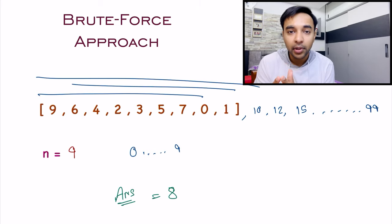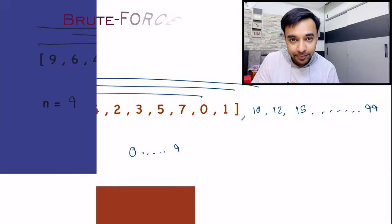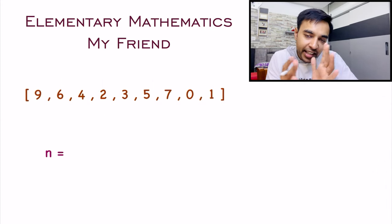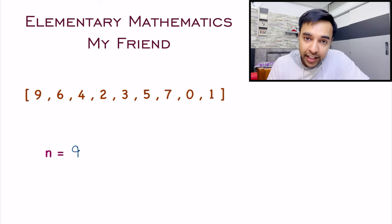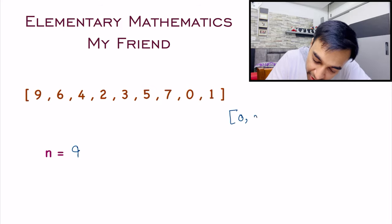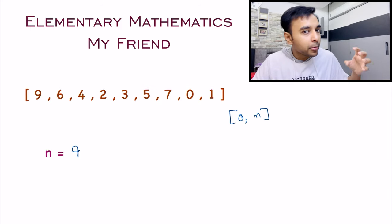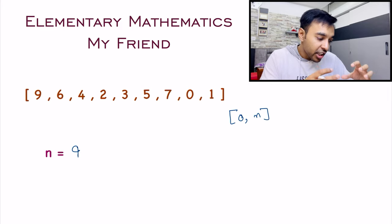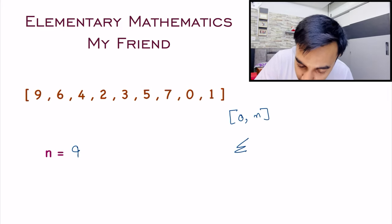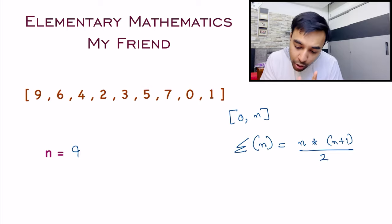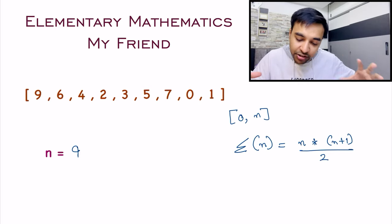What could be a better way to optimize this solution than mathematics itself? Let's say I have this sample test case again. To calculate the value of n, you just calculate the total number of elements, so n equals 9. According to the problem statement, this array should have all the integers in the range 0 to n. Going back to the basics of mathematics, the summation of numbers in the range 0 to n is sigma n, which equals n multiplied by (n+1) divided by 2. This will be the total sum if you have all the integers between the range 0 to n.